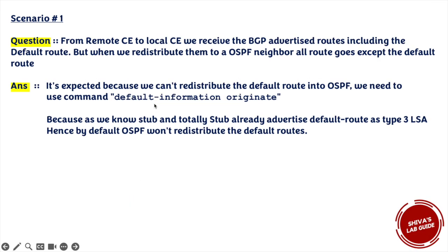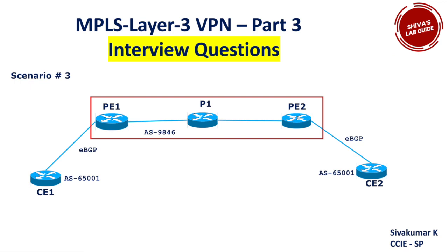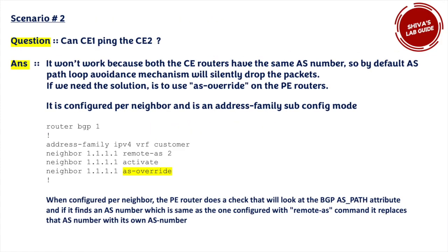To summarize scenario three: by default a ping between CE1 and CE2 will NOT work when both share the same AS number, because the AS path loop prevention mechanism simply drops the packet. The solutions are: use 'as-override' on the PE routers (the commonly used method in service provider environments), or use the 'allowas-in' command, which also avoids the problem.